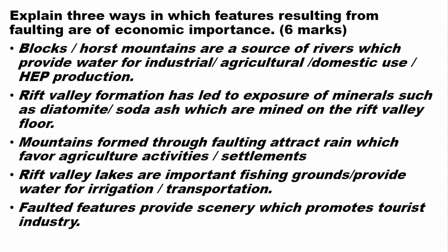Explain three ways in which features resulting from faulting are of economic importance. Block mountains are a source of rivers, which provide water for industrial, agricultural, domestic, and hydroelectric power production. The rift valley's formation has led to exposure of minerals such as diatomite and soda ash, which are mined on the rift valley floor. Mountains formed through faulting attract rainfall, which favours agricultural activities and settlements. Rift valley lakes are important fishing grounds and provide water for irrigation and transportation. Faulted features also provide scenery that promotes the tourism industry.